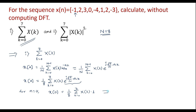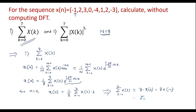Therefore, summation k equal to 0 to 7 of x of k is equal to 8 into x of 0. The value of x of 0 is minus 1, therefore summation k equal to 0 to 7 of x of k is equal to minus 8. This is the required result.